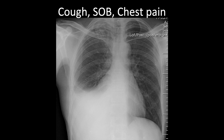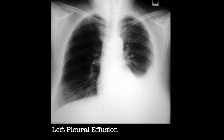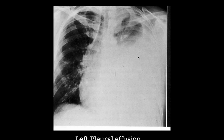Moving outside the lung: here toward the right base there's a soft tissue opacification with a meniscus sign and the right hemidiaphragm is obscured — this is a pleural effusion. A larger pleural effusion on the left is so big it's causing mass effect, pushing the mediastinum to the other side.